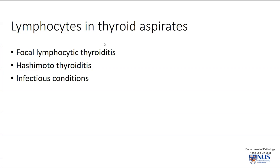It is important to know the spectrum of differential diagnosis when we encounter significant numbers of lymphocytes in thyroid aspirates. They can of course be seen in benign conditions, but one must always bear in mind the possibility of lymphoproliferative disorders. Clinical correlation is important, as well as awareness of the atypical features on thyroid cytology.